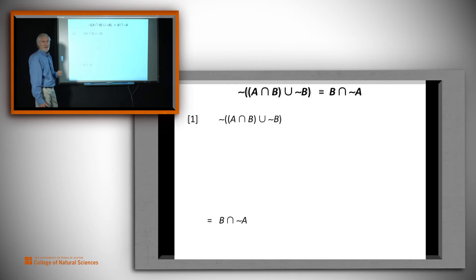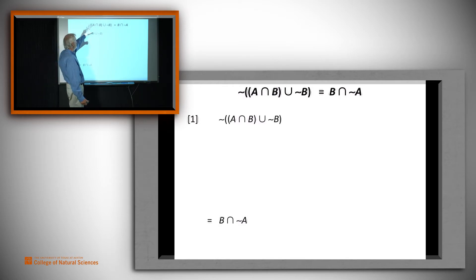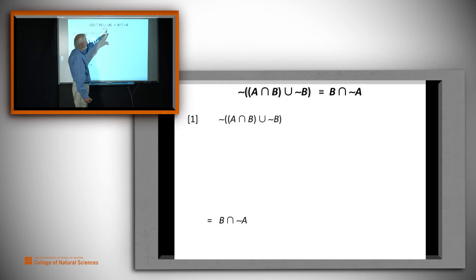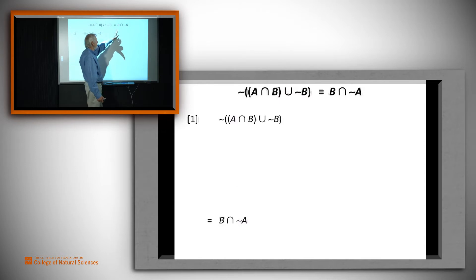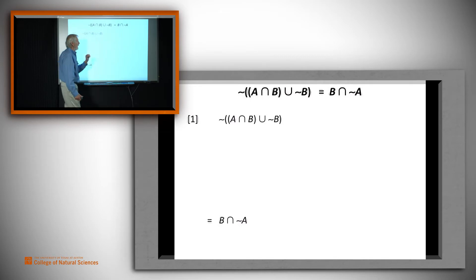Let's do an example. Here is the complement of A intersect B, union with the complement of B, is equal to B intersected with the complement of A. If I look at that, I see it's not obvious at all that this is true.